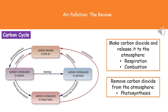If we look at the diagram, we can see we start off at the top with carbon dioxide in the air. That's going to be removed from the atmosphere by photosynthesis carried out by plants, and it'll be converted into the carbon compounds in the plants.